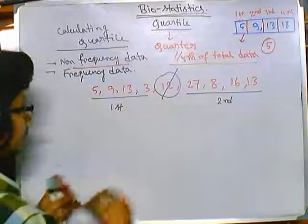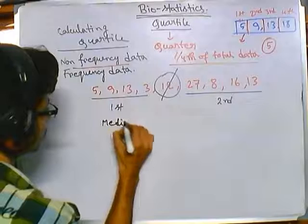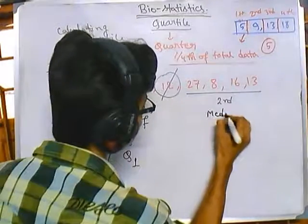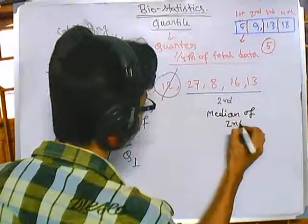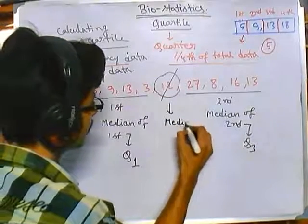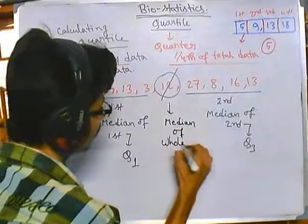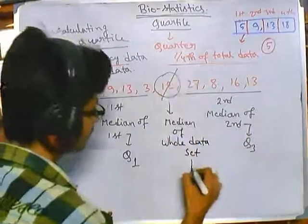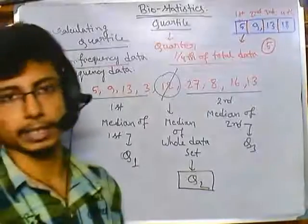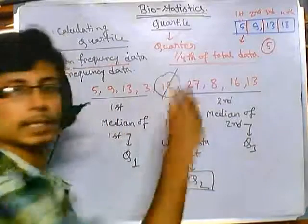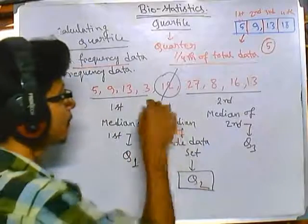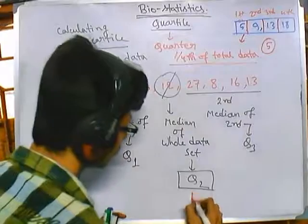Among the two groups: the median of the first group is going to be Quartile 1, the median of the second group is going to be Quartile 3, and the median of the whole data set is going to be Quartile 2. In any condition, Q2 is the median of the whole data set. Since our middle value is 12, the answer for Q2 is 12.